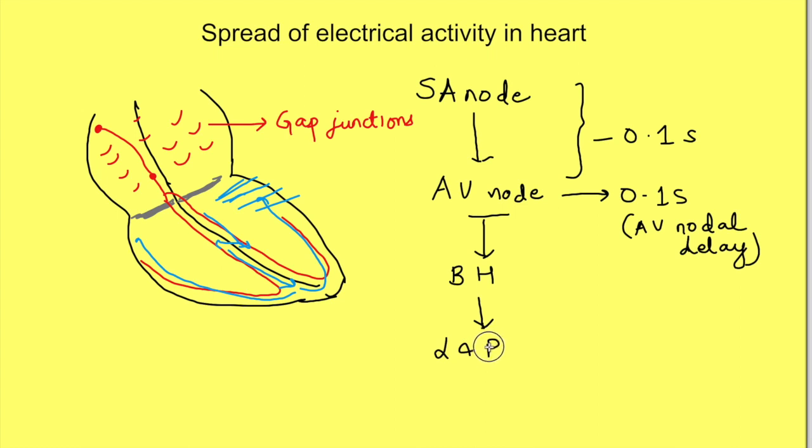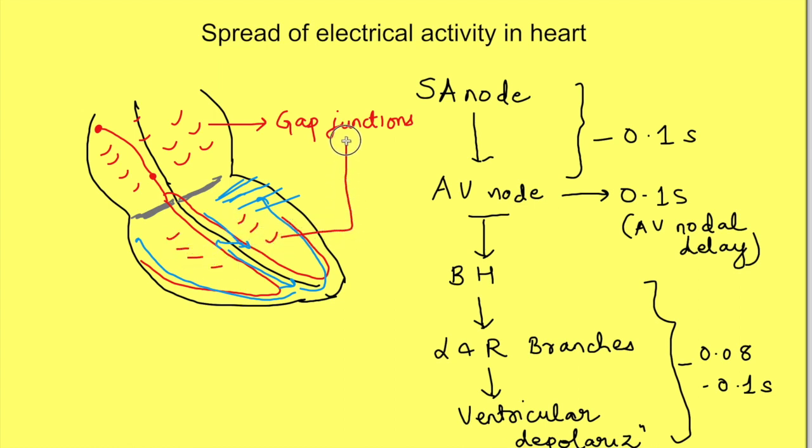If we consider the layers of the heart, remember that these fibers run subendocardially, so electrical activity moves from endocardium to epicardium. During all this process, do not forget that the heart is a syncytium because of gap junctions, and electrical activity spreads to other muscle cells via gap junctions.